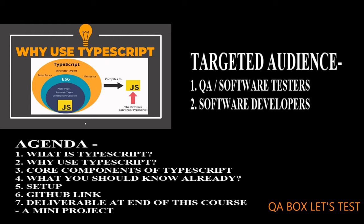Let's understand this diagram. We have ES5 JavaScript, then we have a circle which represents ES6 JavaScript, and then we have the TypeScript circle. In ES6 we have certain features like destructuring, fat arrow, const, etc. And in TypeScript we see interfaces and strongly typed — which means compile time checking. TypeScript compiles down to JavaScript only, because browsers can't run TypeScript.